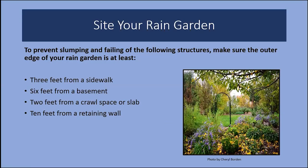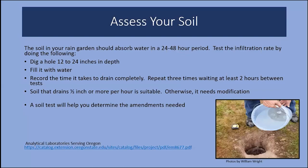When siting your rain garden, maintain the integrity of your hardscapes and structures: be three feet from a sidewalk, six feet from a basement, two feet from a crawl space or slab, and 10 feet from a retaining wall. Information from the city or county will define those setbacks. Before selecting a spot, consider how you plan to route water to your rain garden. Assess your soil just as with the bioswale — it's important that it has the ability to absorb water in a 24 to 48 hour period, so repeat the infiltration test three times. A soil test will help determine any amendments needed.